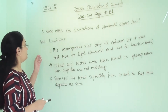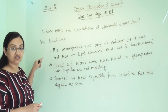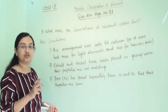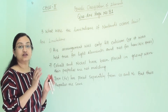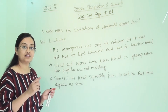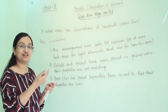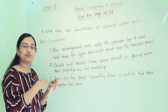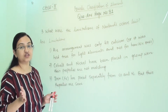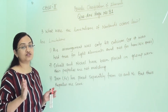Third question: what were the limitations of Newland's octave law? Newland arranged elements in increasing order of their atomic masses such that every eighth element would have similar properties to the first, and he compared this arrangement with musical notes — that is why it was called Newland's octave law.